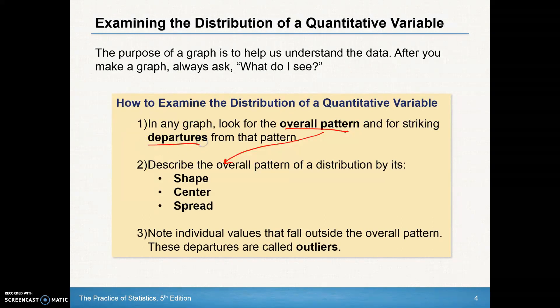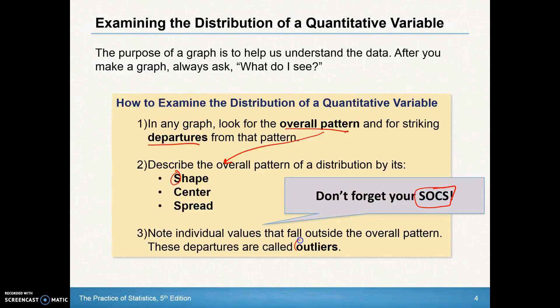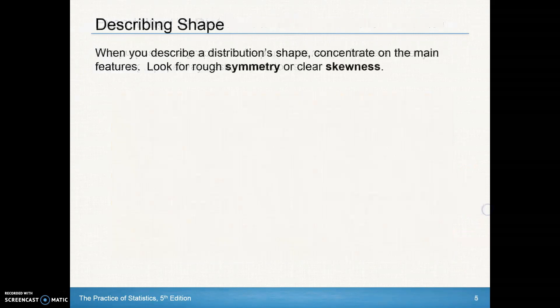And then for the departures, we're going to make sure that we look to see if there are any values that fall outside the overall pattern. Those are called outliers. So right now, we're just going to kind of trust our eyes. We'll learn a little mathematics behind all that. So we're going to remember, this is our textbook talks about, don't forget your socks. Our socks would be the shape, outliers, center, and spread. This is kind of just a little mnemonic device to help you remember when you're asked to examine a distribution or describe a distribution.